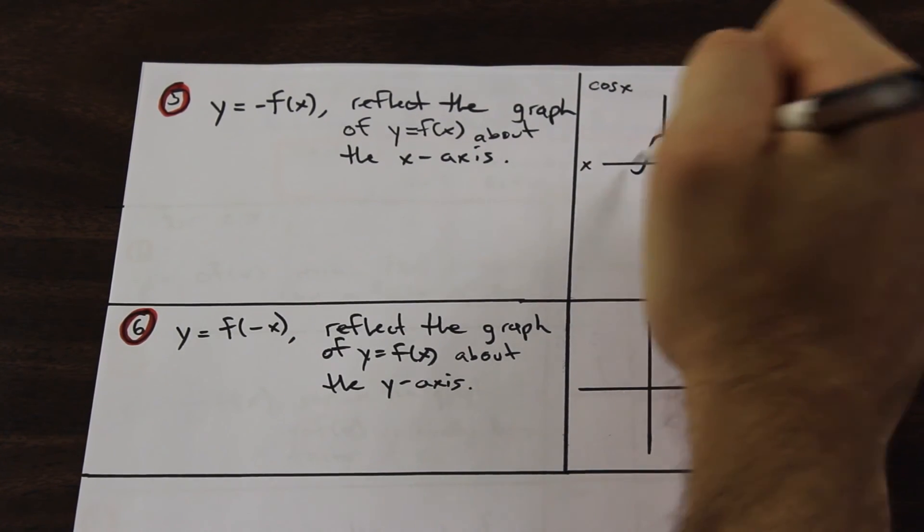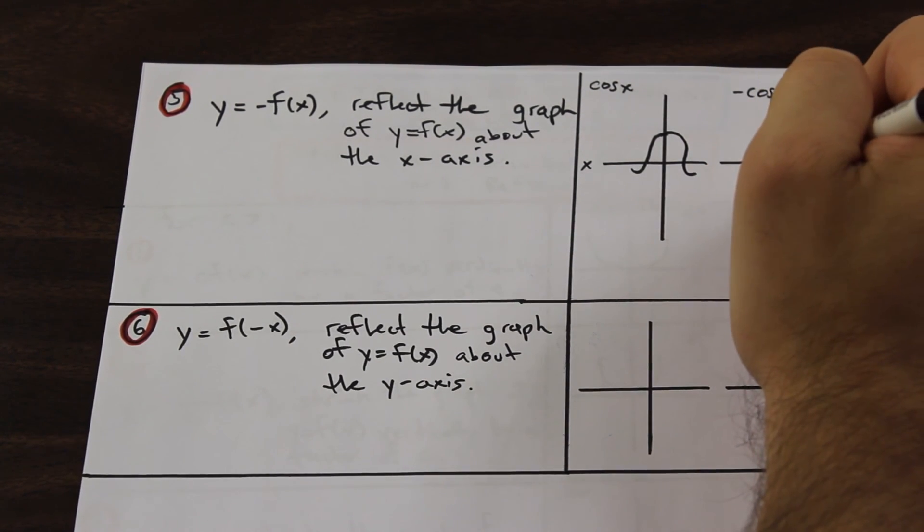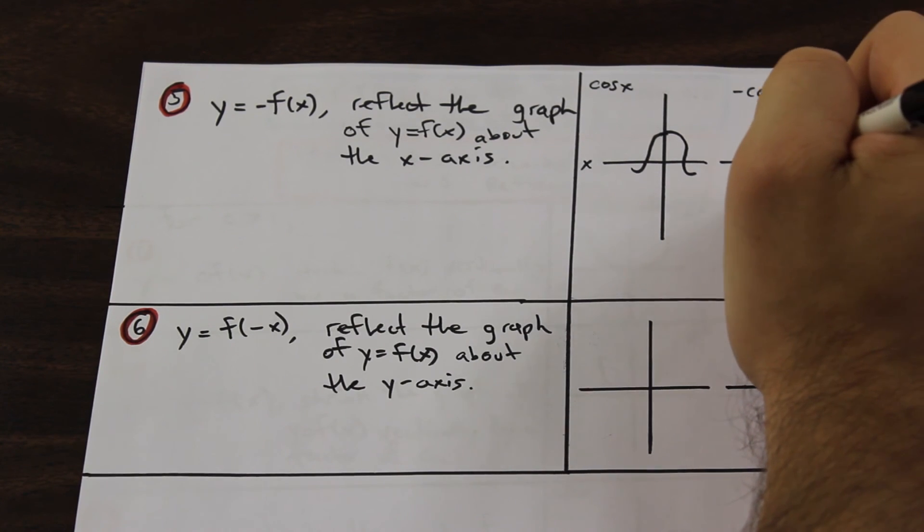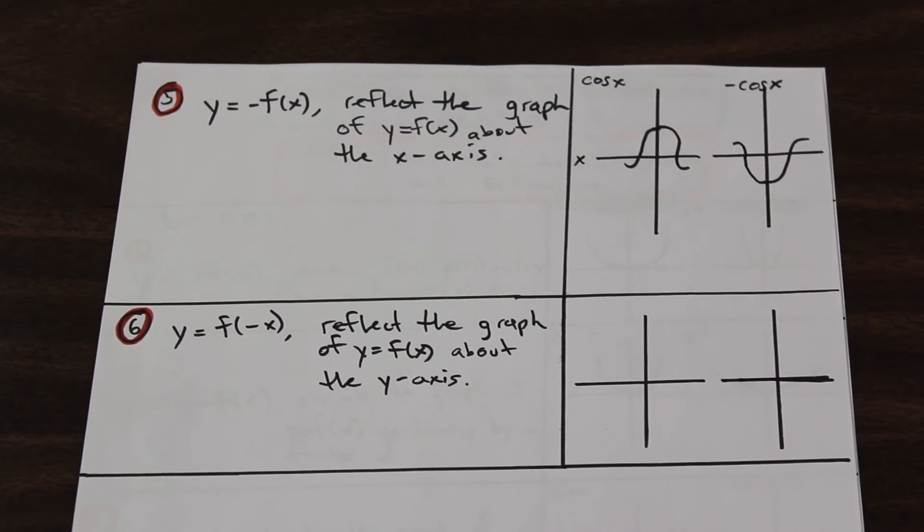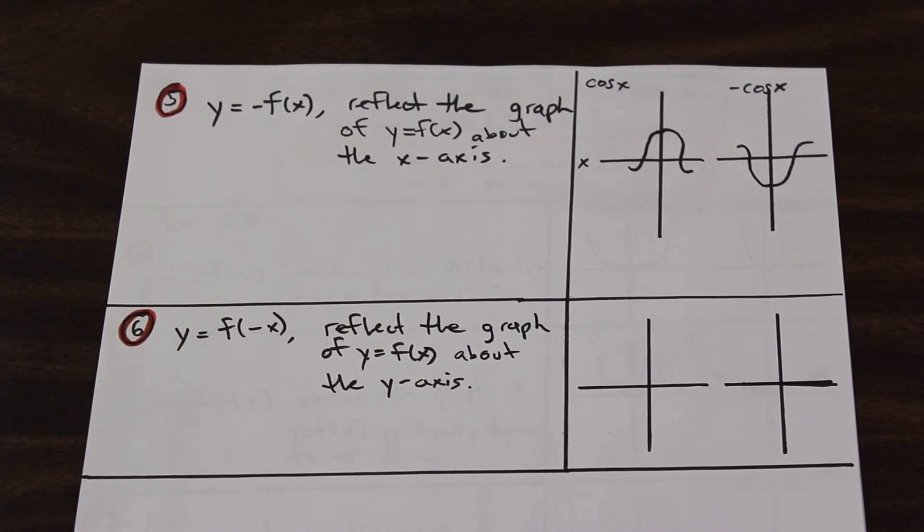And what is going to happen with cos x is we're going to reflect it about the x-axis. So what does that mean? Well, it's just going to be reflected like this. That's it. That's as simple as that.